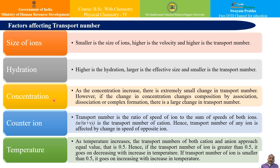The third factor is concentration. As the concentration increases, there is an extremely small change in transport number — it does not affect the transport number to a great extent. However, if a change in concentration changes composition by association, dissociation, or complex formation, there is a large change in transport number. The fourth factor is the counter ion: the transport number of an ion equals its speed u divided by (u + v), so it is affected by changes in the speed of the opposite ion.